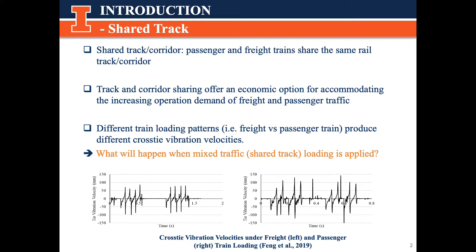In the beginning, I will introduce some background information about shared track. Shared track, or corridor, indicates the situation where passengers and freight trains share the same rail track or corridor. This is a good option for saving money given increasing operation demand of freight and passenger traffic. The bottom two figures show different vibration velocities subjected to freight train loading on the left and passenger train loading on the right. It's obvious that different loading patterns will cause different effects on both cross-tie and ballast layer. But what will happen if we mix passenger and freight train loading together instead of applying a single type of train loading?